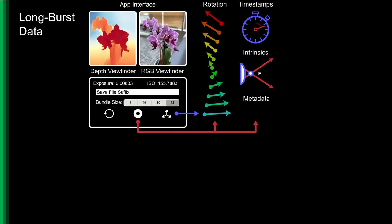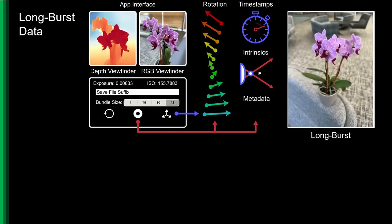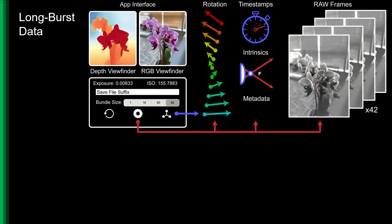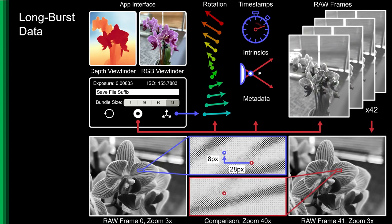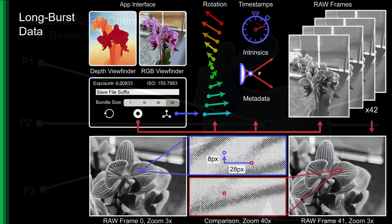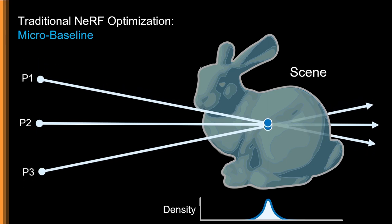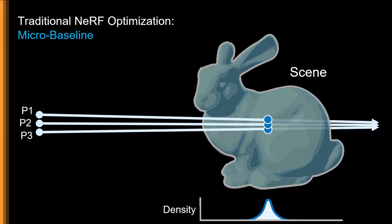But in our problem setting, our long burst data only has millimeters of camera motion, and only on the order of a few dozen pixels of parallax. This makes the optimization look a lot more like this, where adjacent rays each sample their own point in space at inconsistent and ambiguous depths.